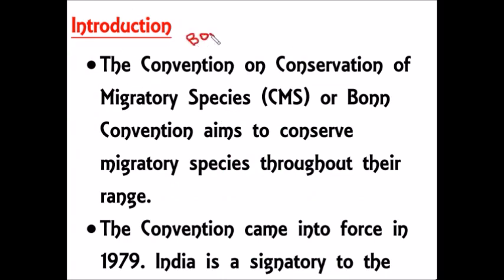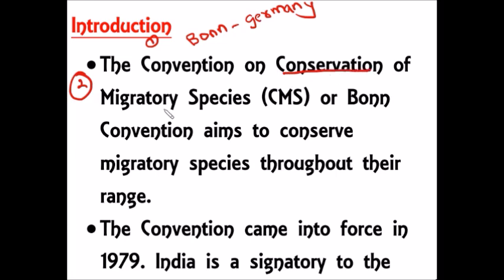The first important exam point is that Bonn is a place in Germany. The second important point is that the Bonn Convention is on the conservation of migratory species — it aims to conserve migratory species throughout their range.